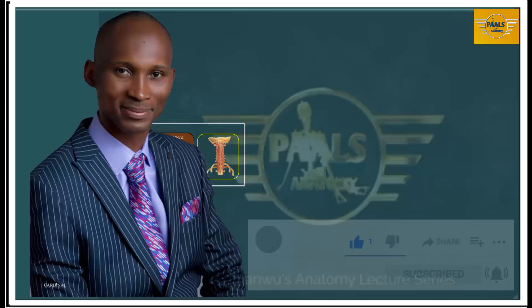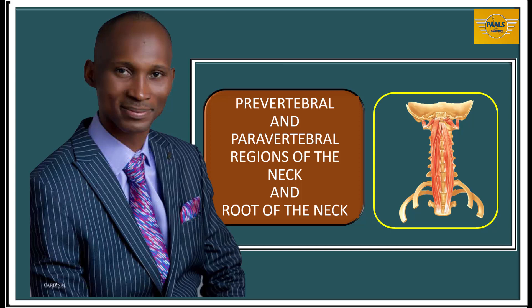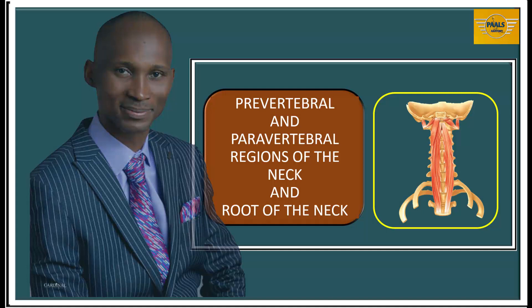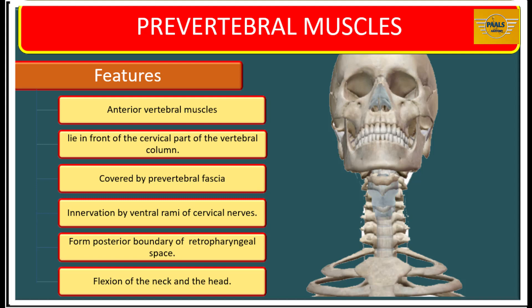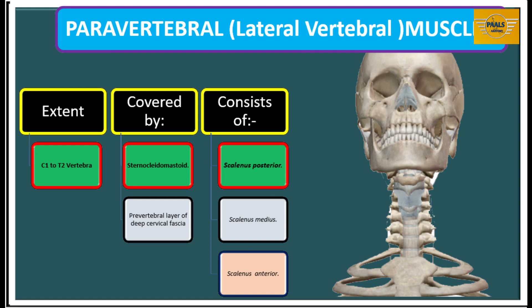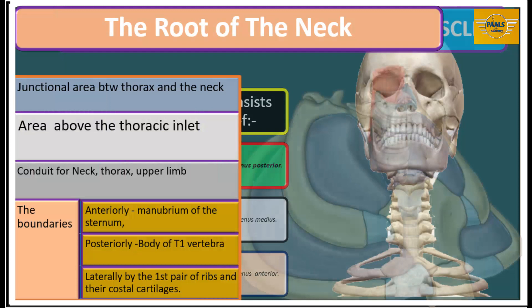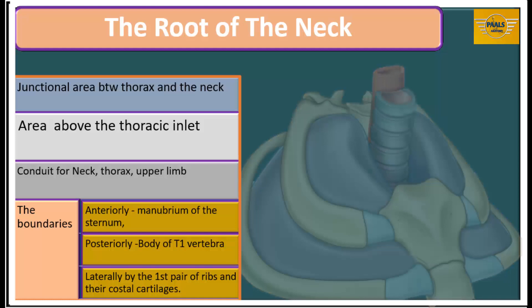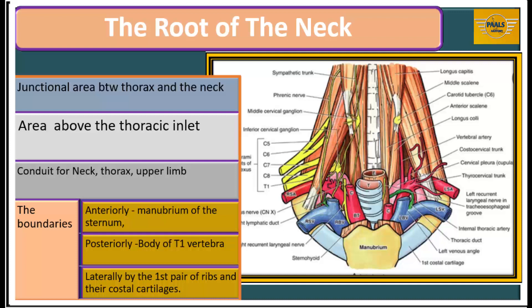In today's lecture, we'll be discussing the pre-vertebral and para-vertebral regions of the neck and also the root of the neck. The lecture is divided into three parts. In the first part, which you're watching, we'll first identify which areas of the neck are called pre-vertebral and para-vertebral regions. We'll then determine their extents, identify the muscles within the regions, and look at the features of each muscle — the origin, insertion, innervation and action. We'll also locate the region called root of the neck, identify the boundaries, structures within this region, and some intermuscular spaces or triangles.